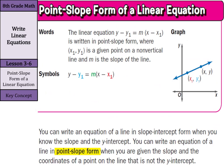Now, our key concept for today is the point-slope form of a linear equation. The linear equation y minus y1 equals m times the quantity x minus x1 is written in point-slope form, where x1, y1 is a given point on a non-vertical line and m is the slope of the line. You can write an equation of a line in slope-intercept form when you know the slope and the y-intercept. You can write an equation in point-slope form when you are given the slope and the coordinates of a point on the line that is not the y-intercept. So, slope-intercept form is convenient when we have our slope and y-intercept; point-slope form can be more convenient when we have the slope and some other ordered pair not involving the y-intercept.